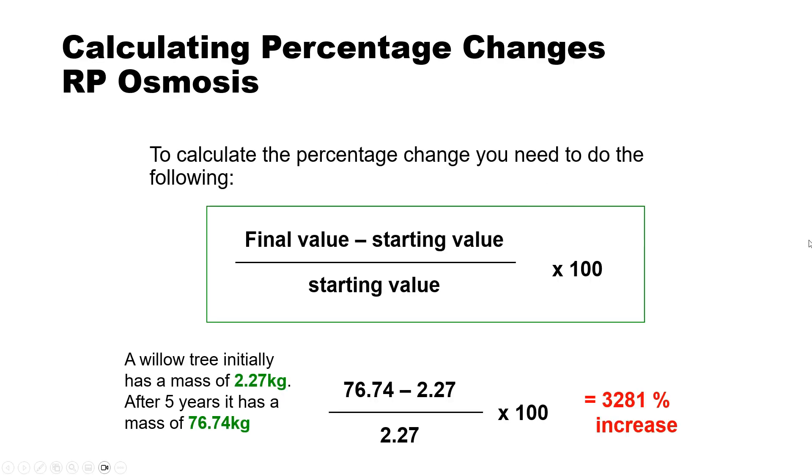You could be asked as well for the required practical related to osmosis and other things, calculating percentage change. So remember, it's the final value minus the starting value. That's the change in mass divided by the starting value times it by 100. So here's an example. A willow tree initially has a mass of 2.27 kilograms. After five years, it has a mass of 76.74. So what you would do is the final minus the starting mass divided by the starting mass times 100. And that tells you the increase, the percentage increase.